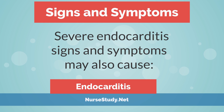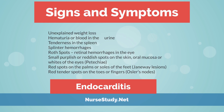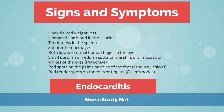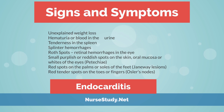Endocarditis signs and symptoms may also include unexplained weight loss, hematuria or blood in the urine, tenderness in the spleen, splinter hemorrhages, Roth spots or retinal hemorrhages in the eye, small purplish or reddish spots on the skin, oral mucosa, or whites of the eyes called petechiae, red spots on the palms or soles of the feet called Janeway lesions, and red tender spots on the toes or fingers called Osler's nodes.